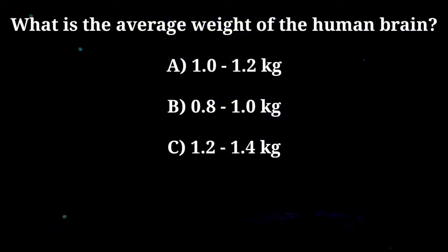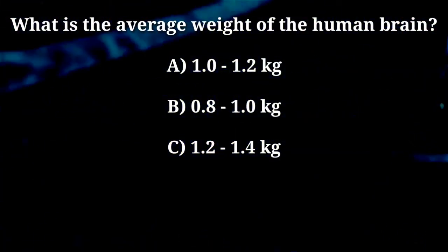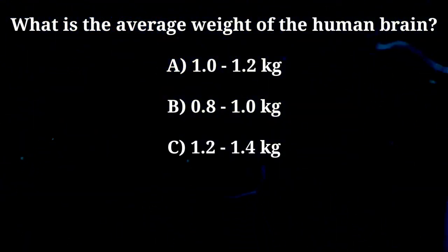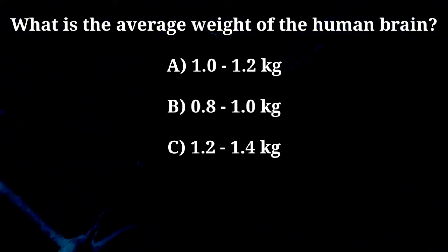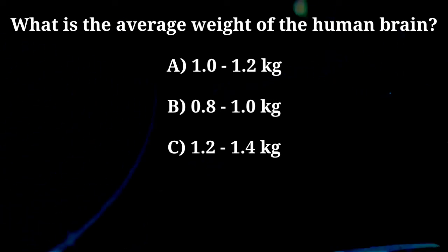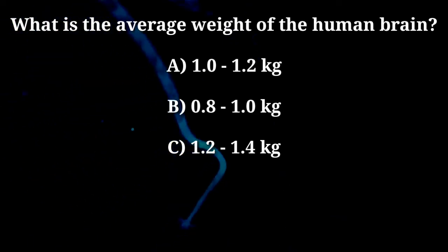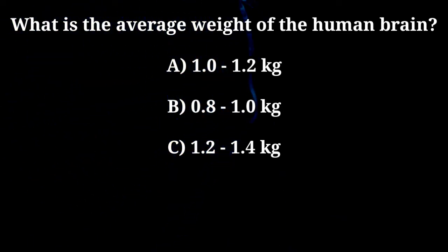What is the average weight of the human brain? A. 1.0 to 1.2 kg. B. 0.8 to 1.0 kg. C. 1.2 to 1.4 kg.